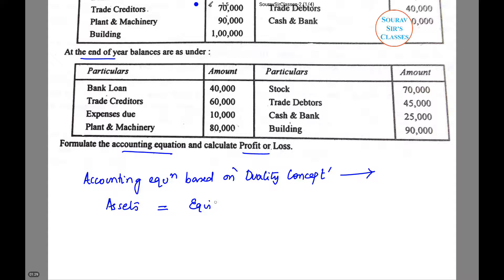So if I denote the internal equities as equity and external equities as liabilities, then the above accounting equation can be rewritten as equity plus liabilities.